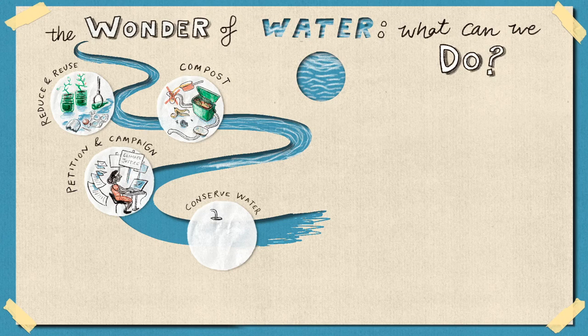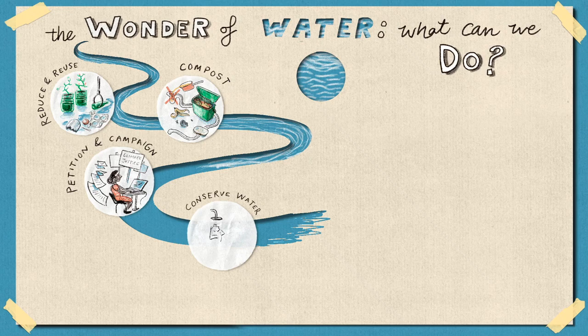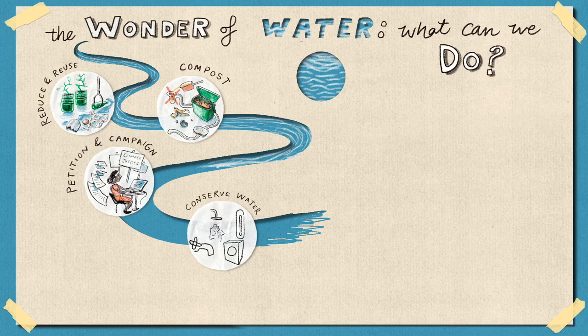Currently, over 2 billion people in 40 countries experience water shortages. Some areas in the UK, like the south and east of England, are already under something called water stress, which is when demand for water is high compared to how much water is available. Because of this, we need to be aware of how much water we're using and try and use less.